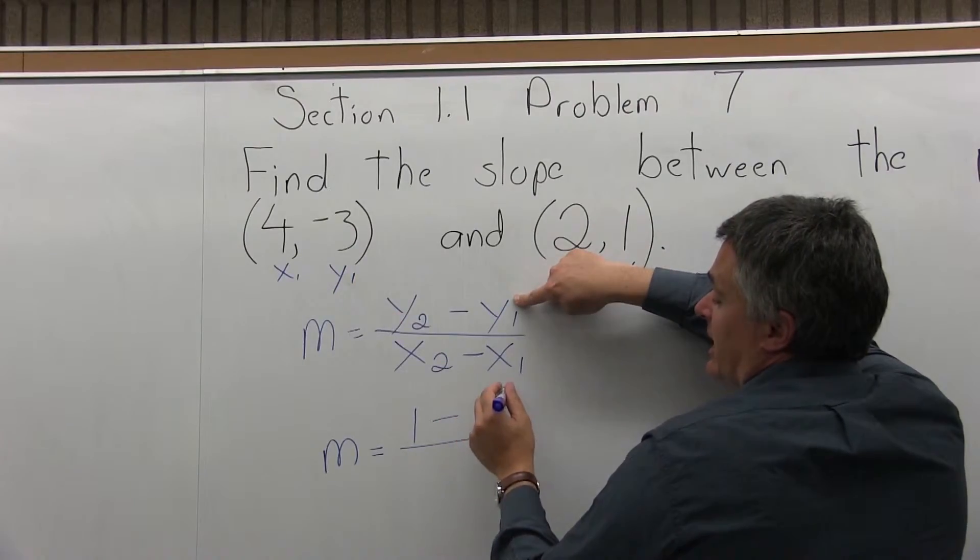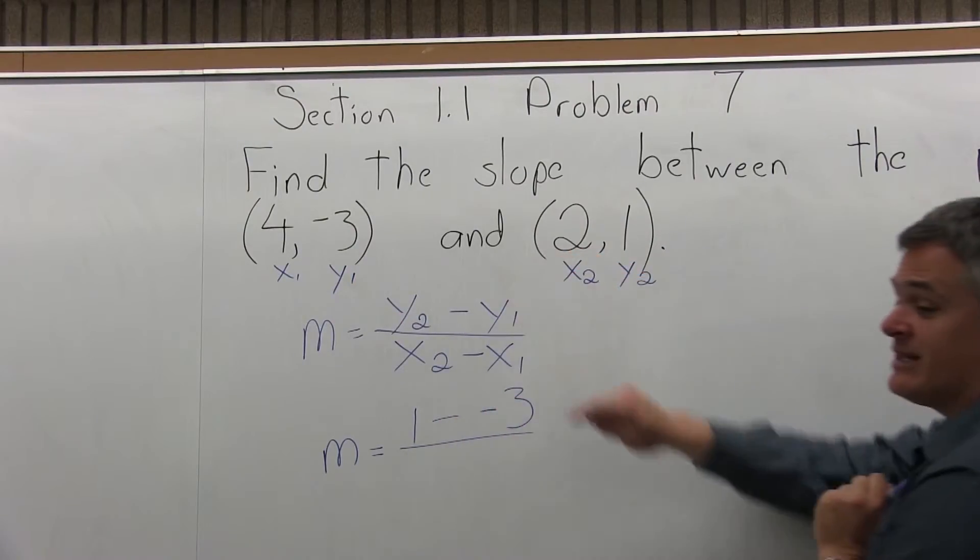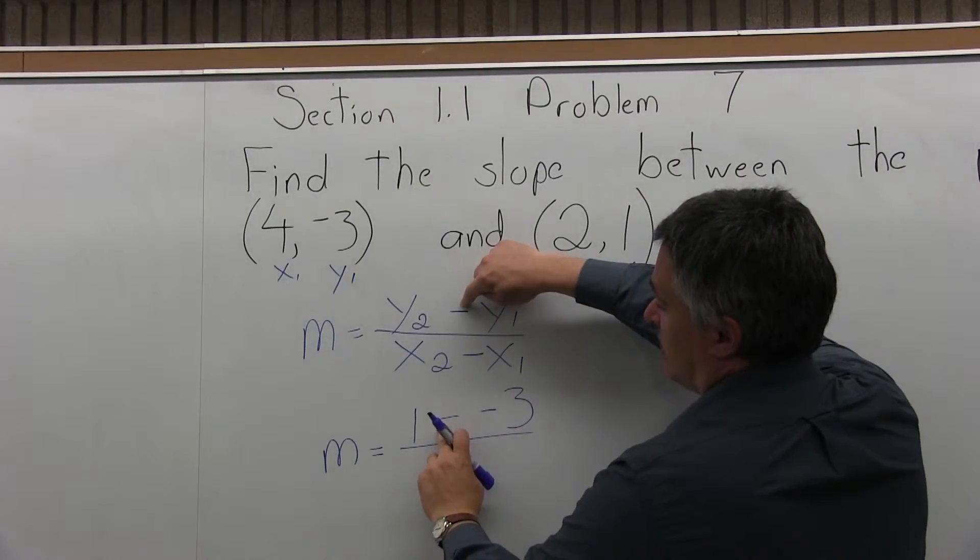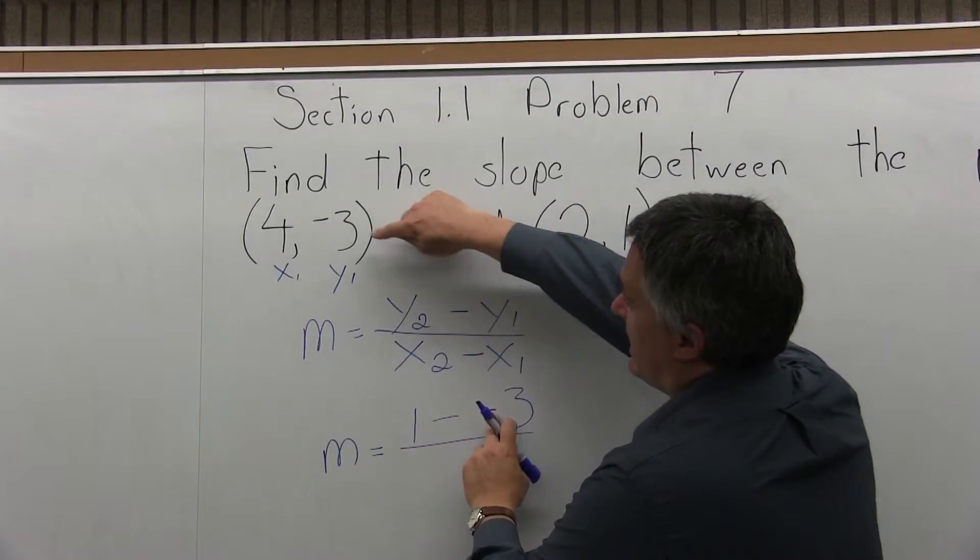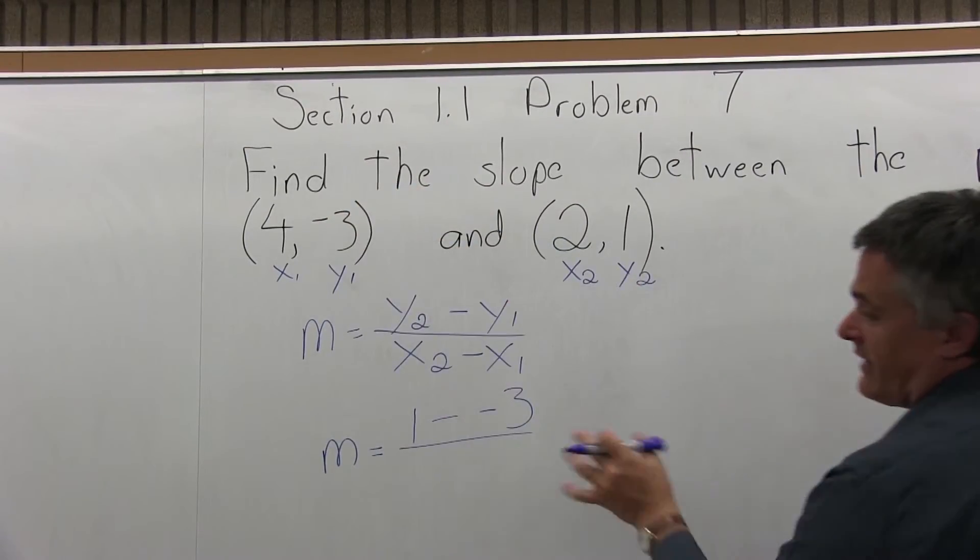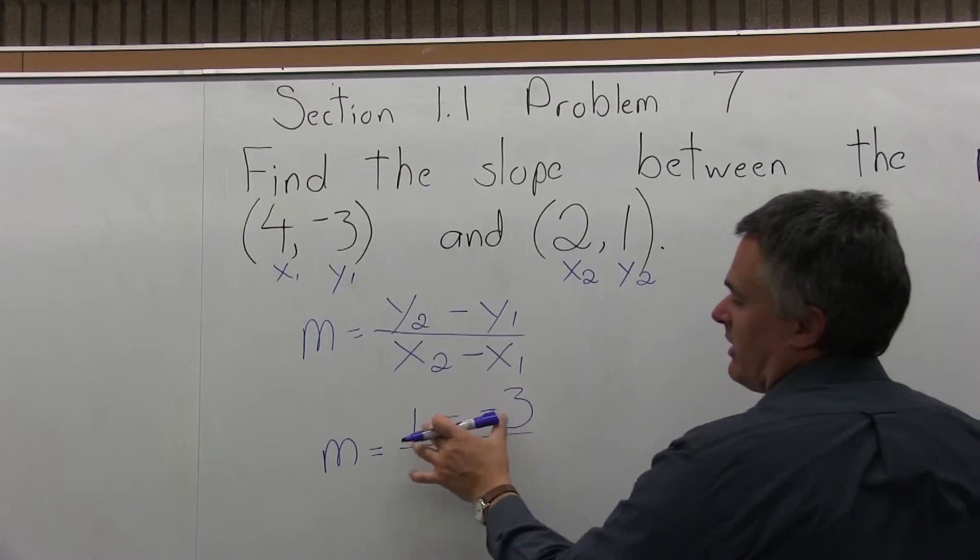Now there are two negatives, so make sure you pay attention. It's 1 minus a negative 3. One negative is from the slope formula. The other negative is from the coordinate of the point. And they're going to cancel, it becomes 1 plus 3.